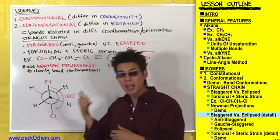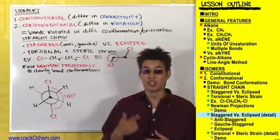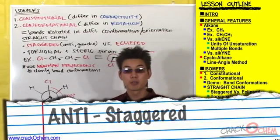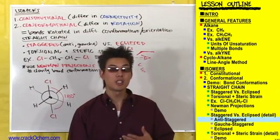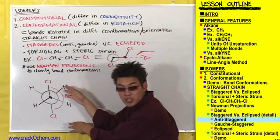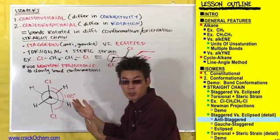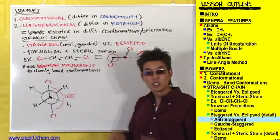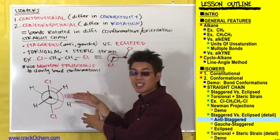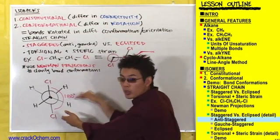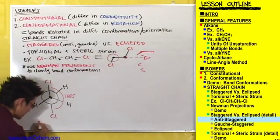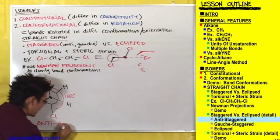So we've established that this is staggered. But now the question is: is it going to be anti-staggered or gauche-staggered? A compound is considered anti-staggered when its two largest atoms are as far away from each other as possible. And this is exactly what's going on here — the chlorines, the two largest substituents, are as far away from each other as possible. They're 180 degrees apart. So we would say that this compound is staggered, but more specifically it's anti-staggered. So let's go ahead and name this guy: anti-staggered.